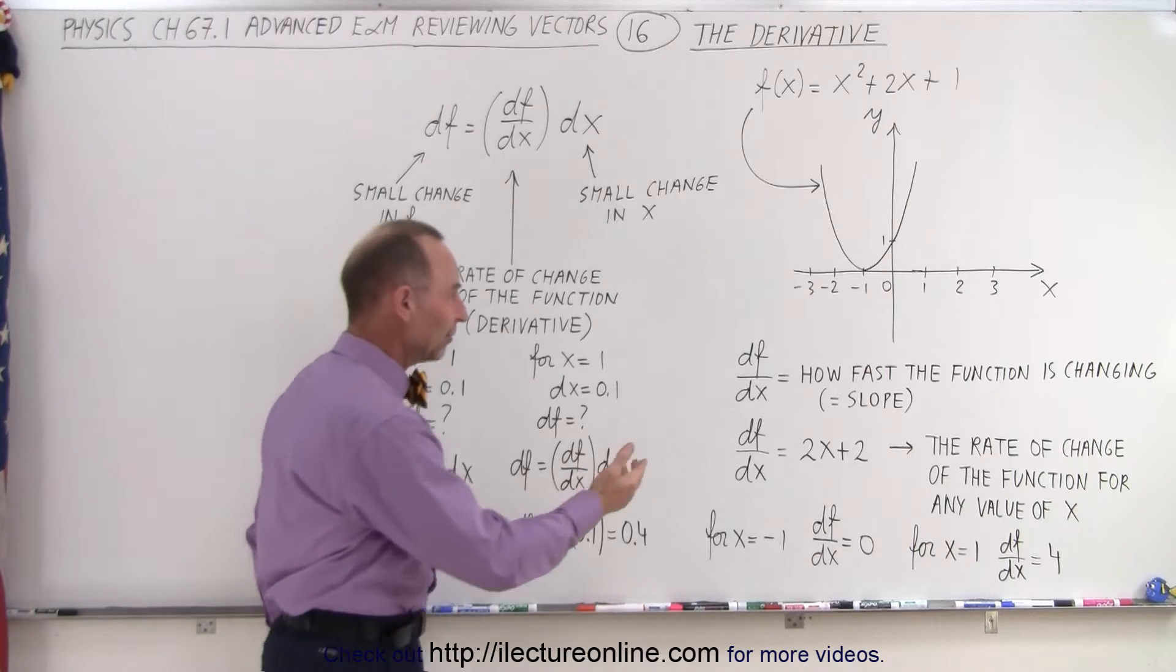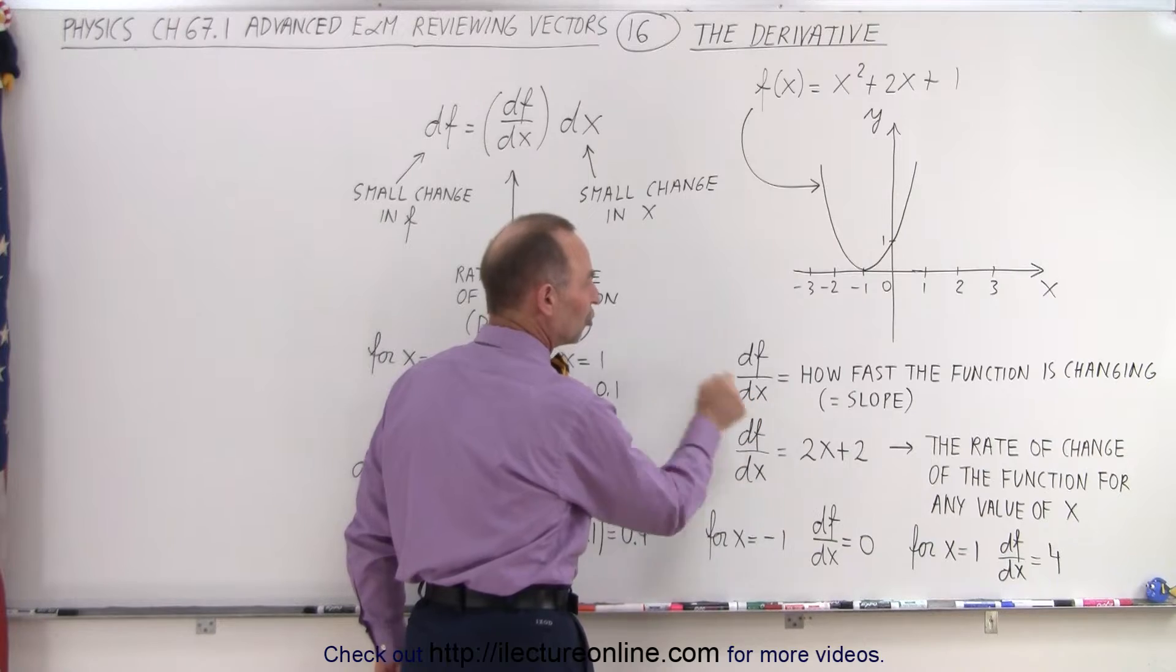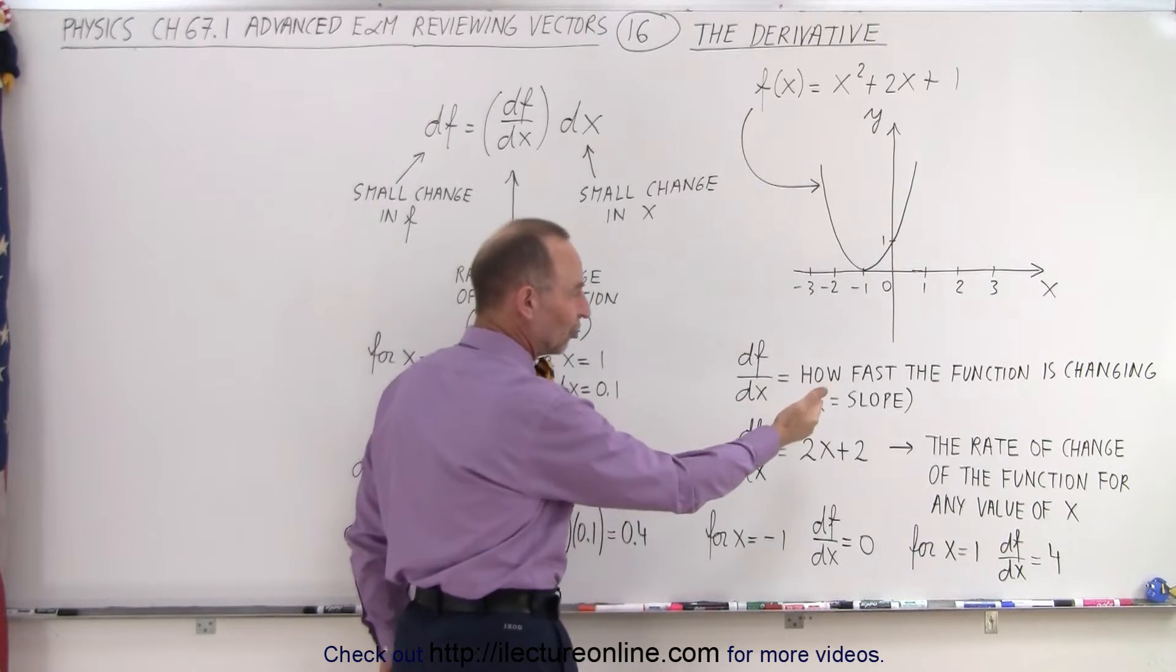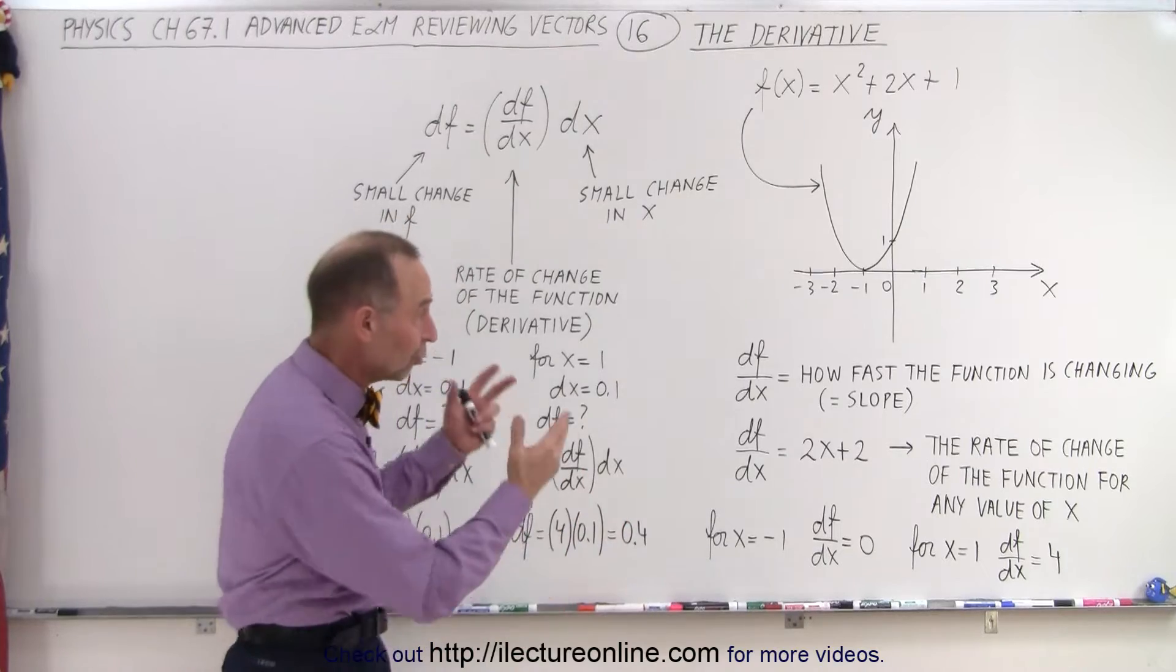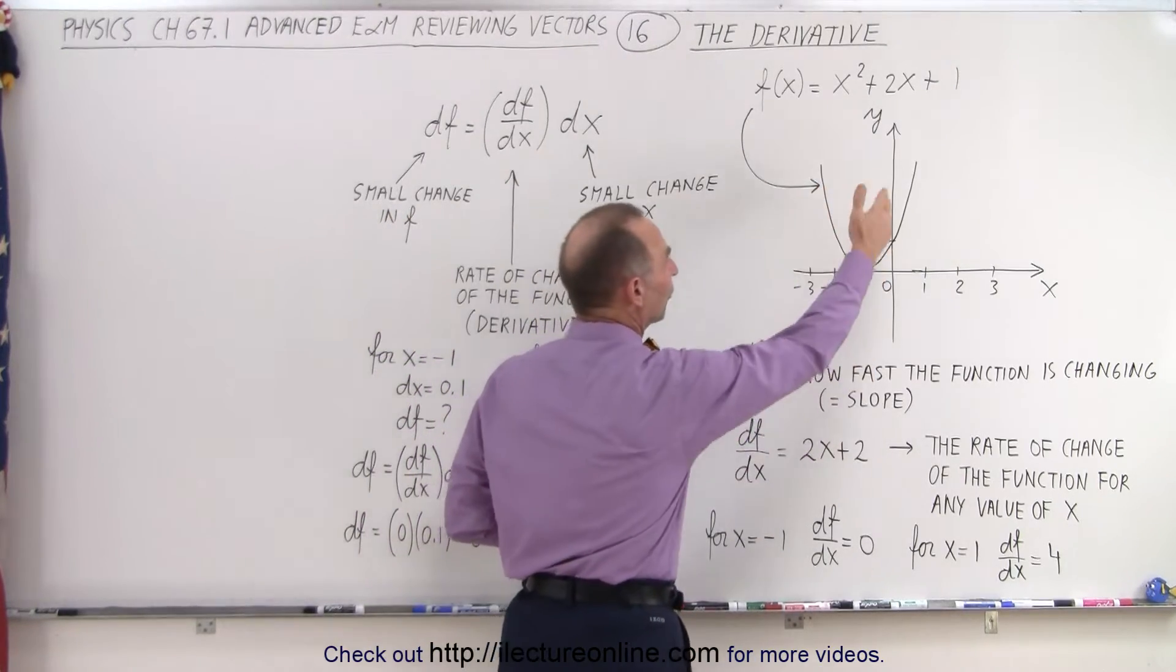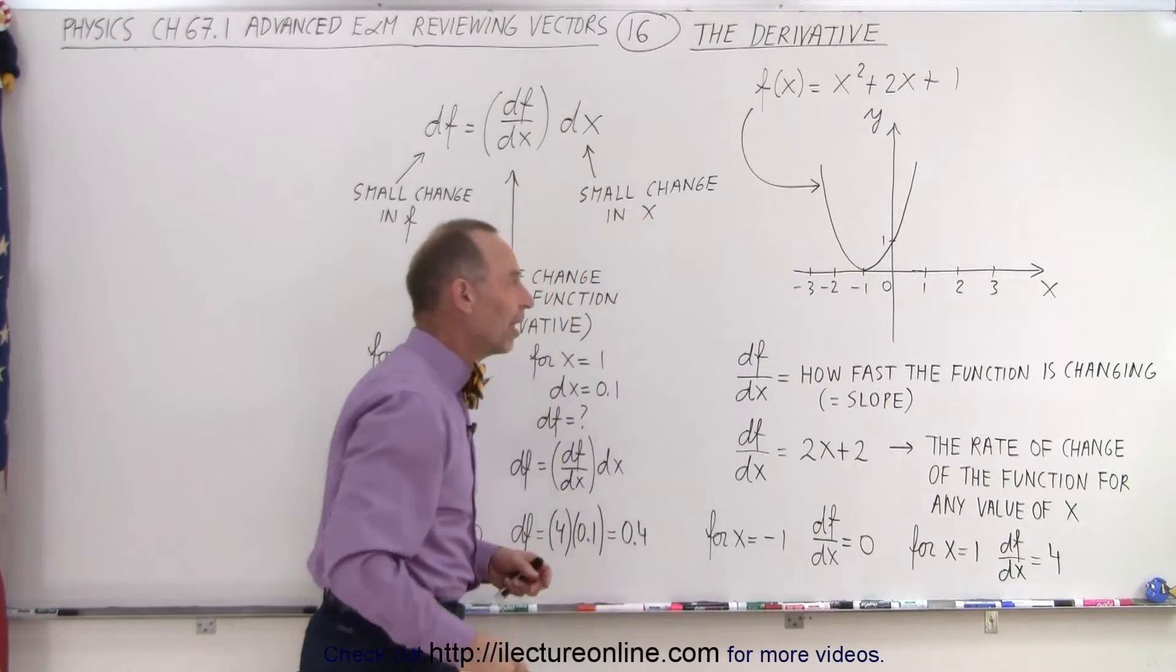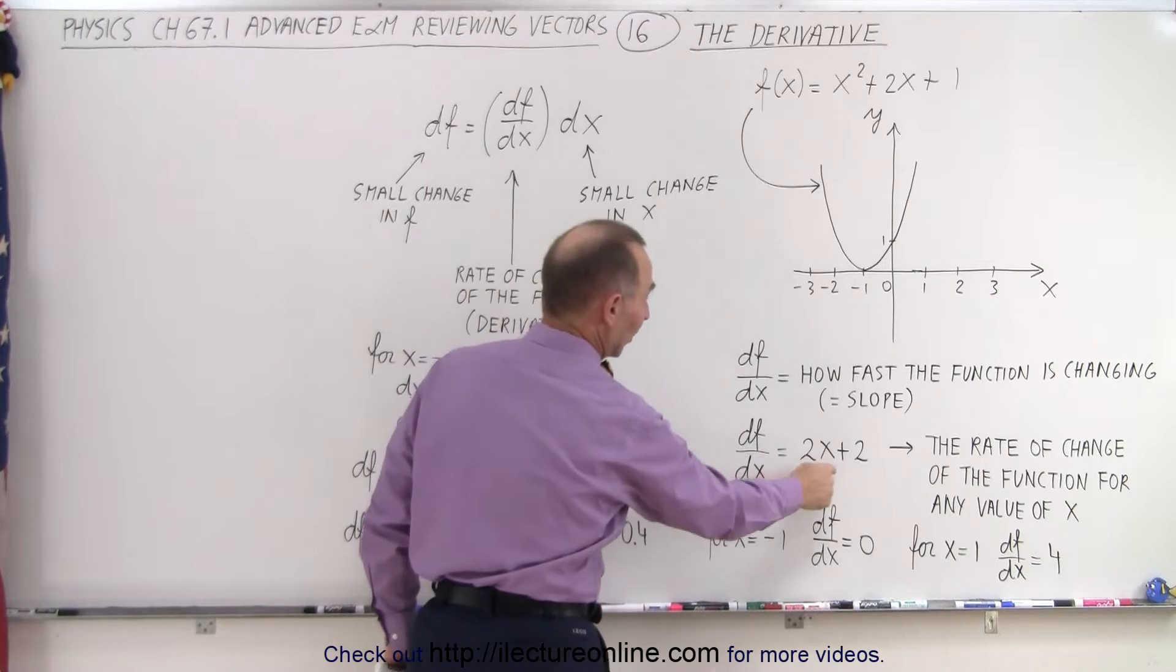Well, here we have the expression df/dx. That means the change in f with respect to a change in x, and it essentially says how fast a function is changing. So that's, by definition, the derivative of that function. It can also be considered the slope of the equivalent graph on the xy plane. So when we take the derivative of our function, we get 2x plus 2.